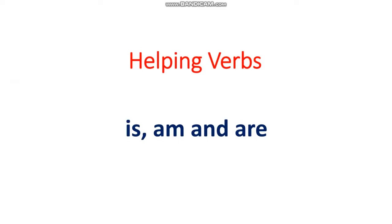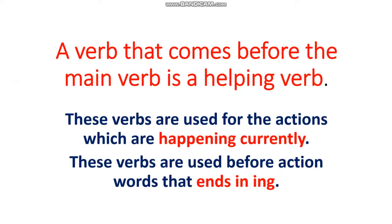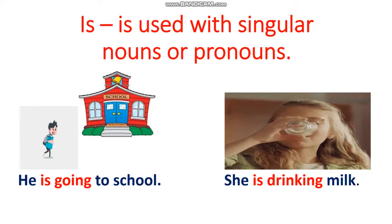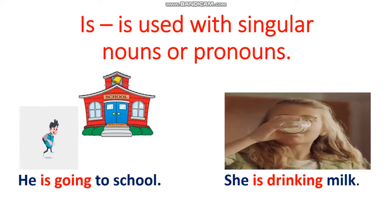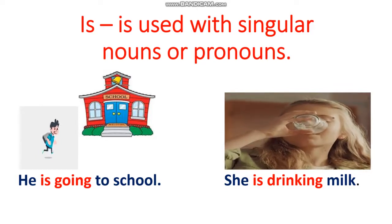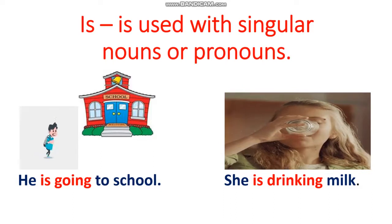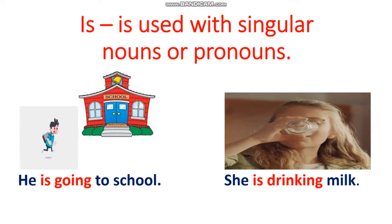Now let's discuss about helping verbs. A verb that comes before the main verb is a helping verb. Today we will discuss about is, am, are — helping verbs. These helping verbs are used for the actions which are happening currently, and also remember students, these verbs are used before action words that end in -ing. Is is used with singular nouns or pronouns. For example, 'He is going to school.' 'She is drinking milk.'